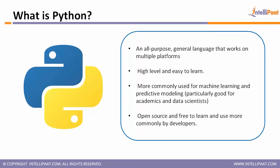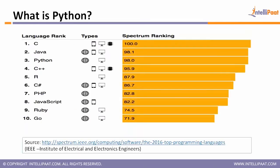Looking at the IEEE Spectrum ranking, Python is ranked third, just after C and Java. Python is mostly used for web development and desktop uses, and it's becoming really popular due to its shallow learning curve.